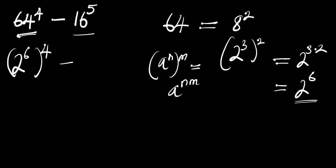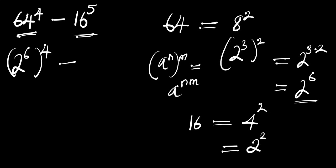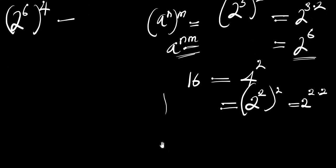Now let's consider 16. It is a perfect square which is 4 squared, and 4 is 2 squared, raised to the power of 2. Applying the same identity, we multiply the exponents: 2^(2×2) = 2 to the power 4. So 16 is the same thing as 2 to the power 4.